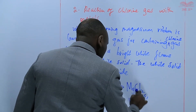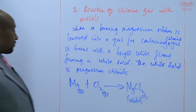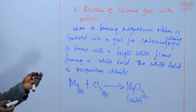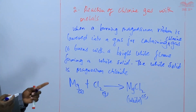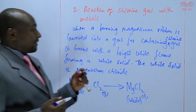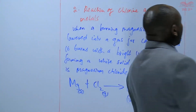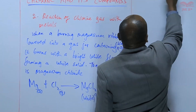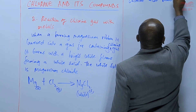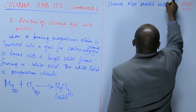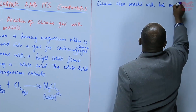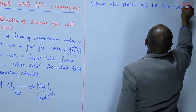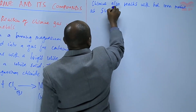Magnesium chloride, which is a white solid, is formed, and that equation does not need any further balancing. Another example: chlorine also reacts with hot iron metal, as shown in the diagram below.